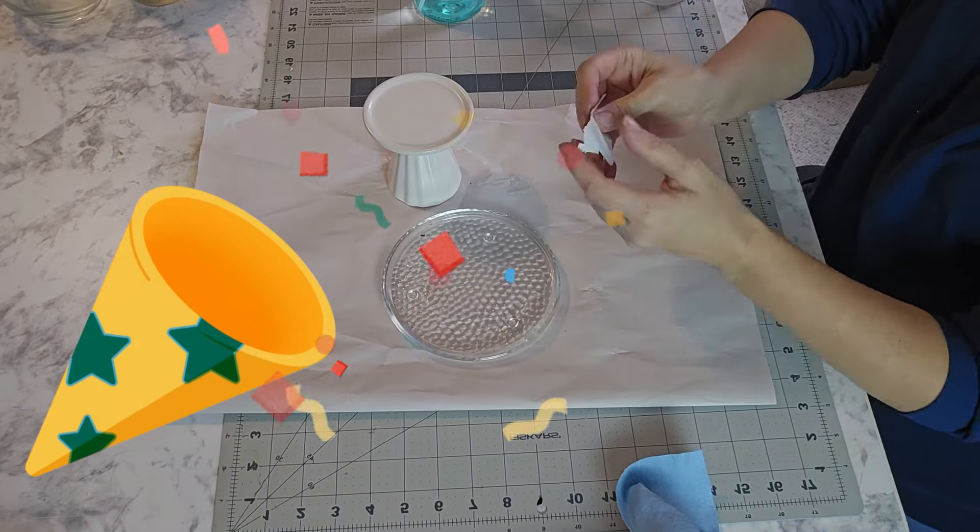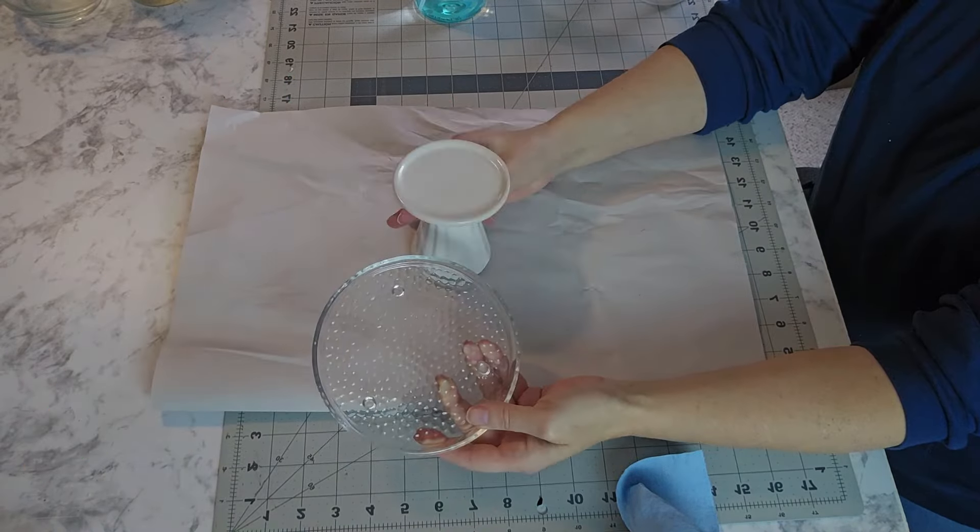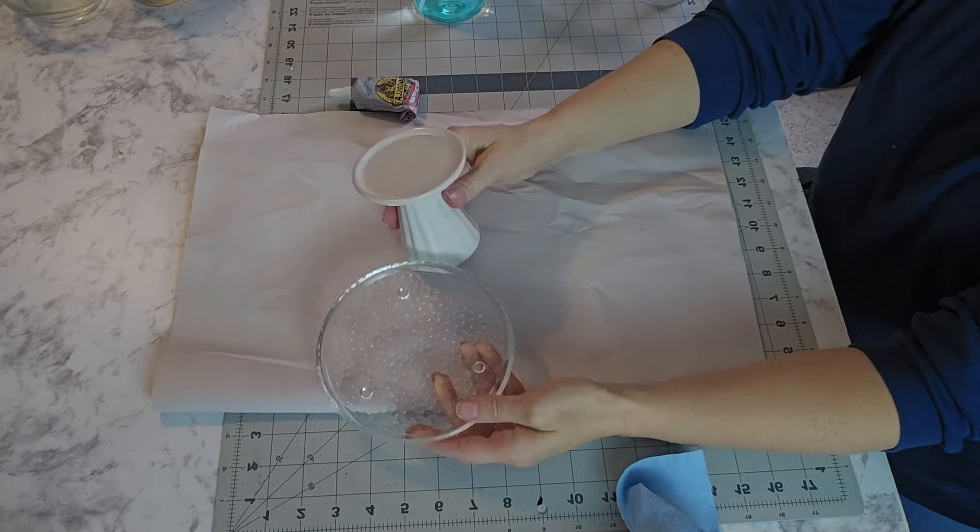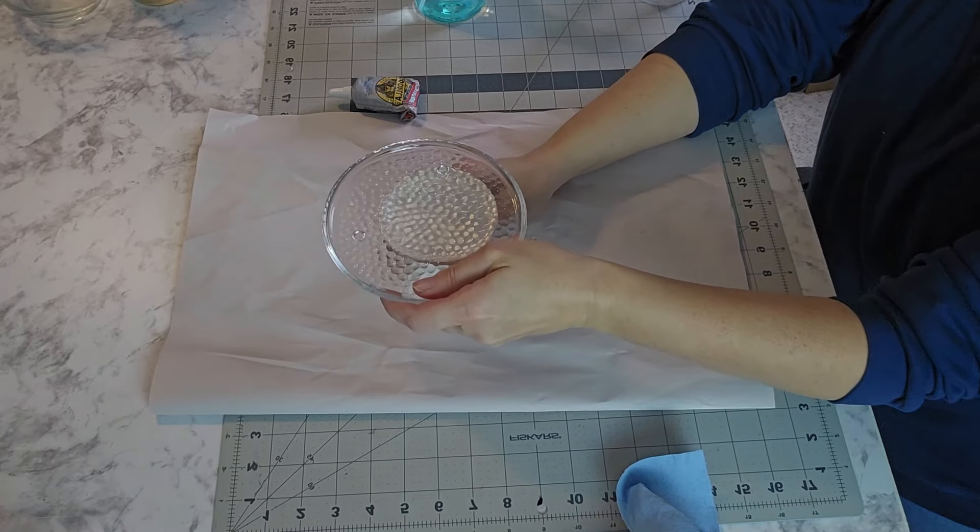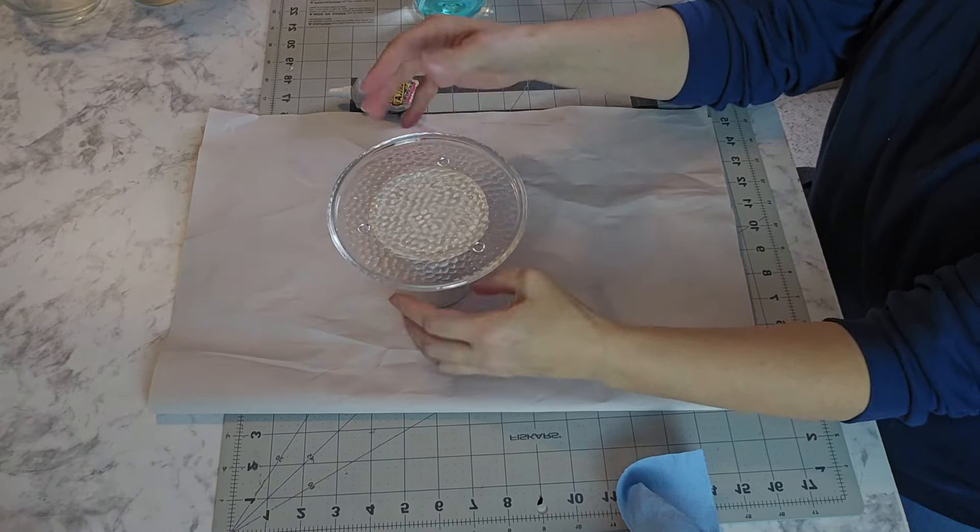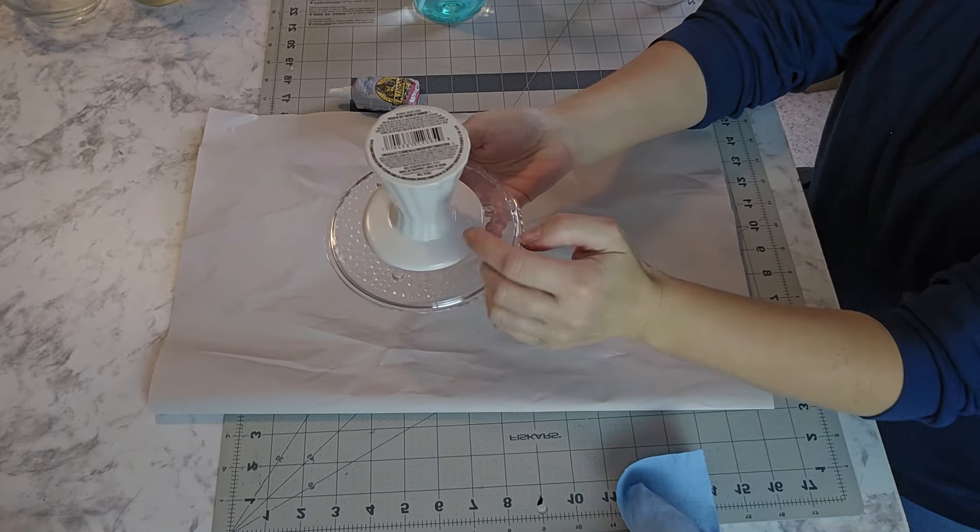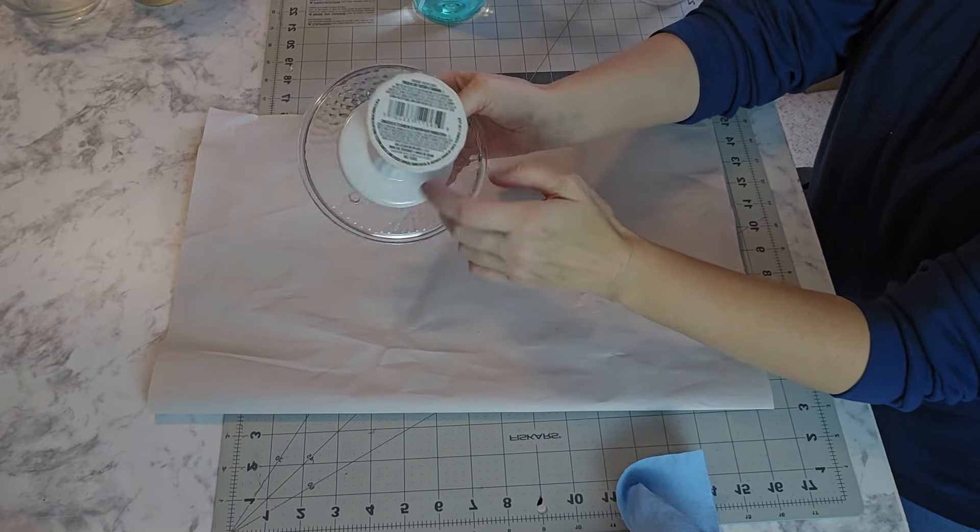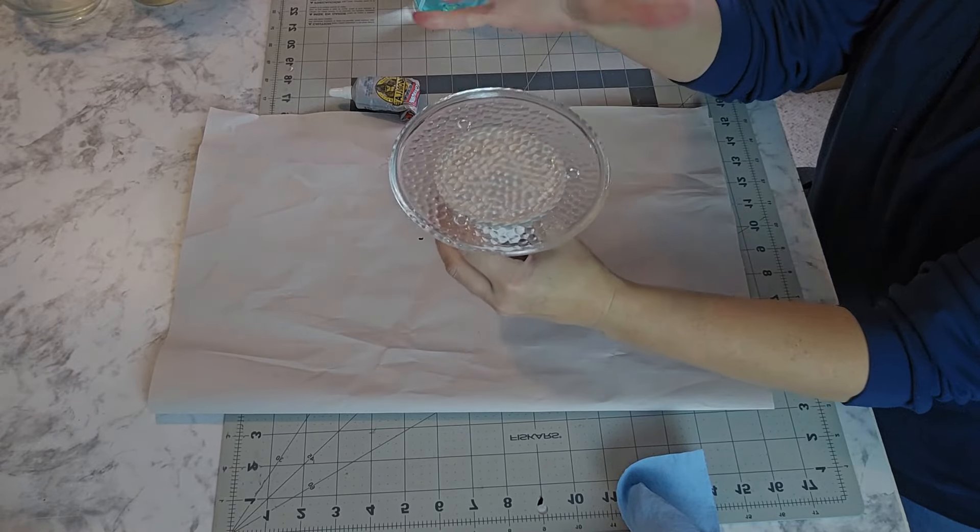So I am going to use some Gorilla Glue to put these pieces together, and this is also another fairly easy one. This little piece actually fits right down in these little pieces that stick up on the bottom of it. It fits in there perfect.